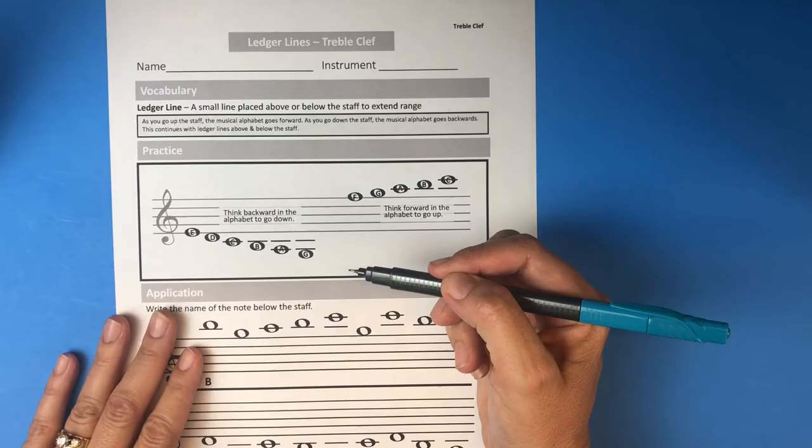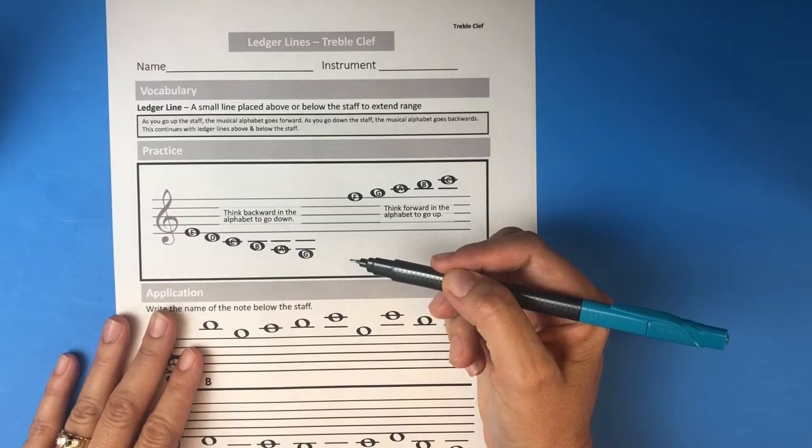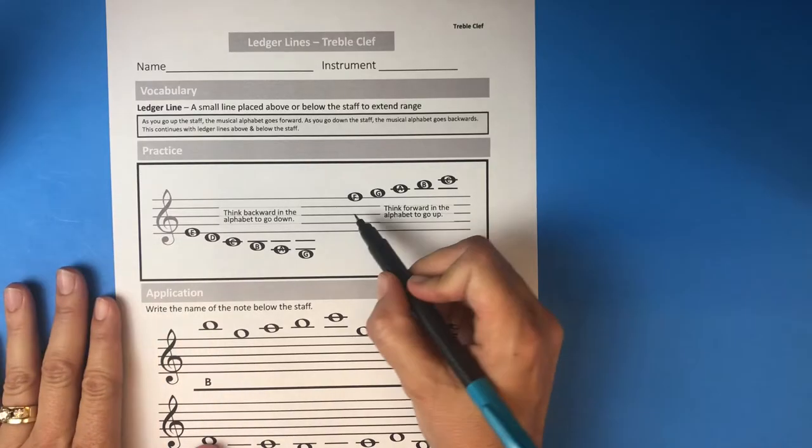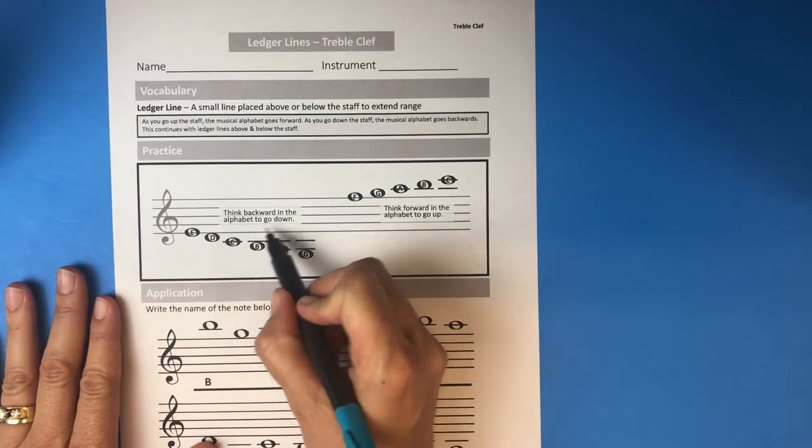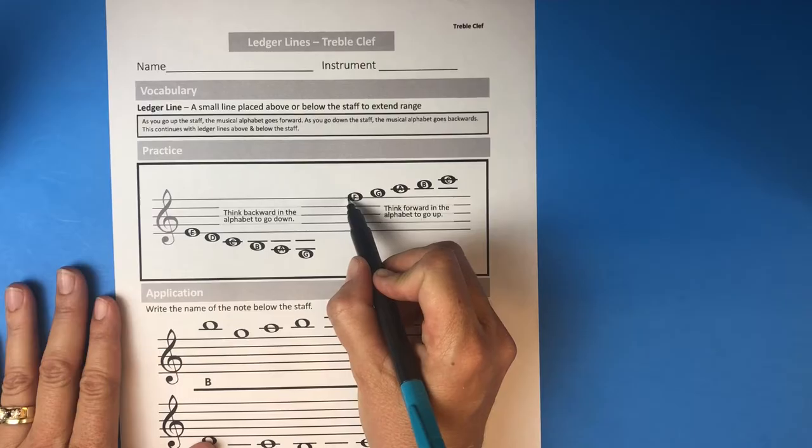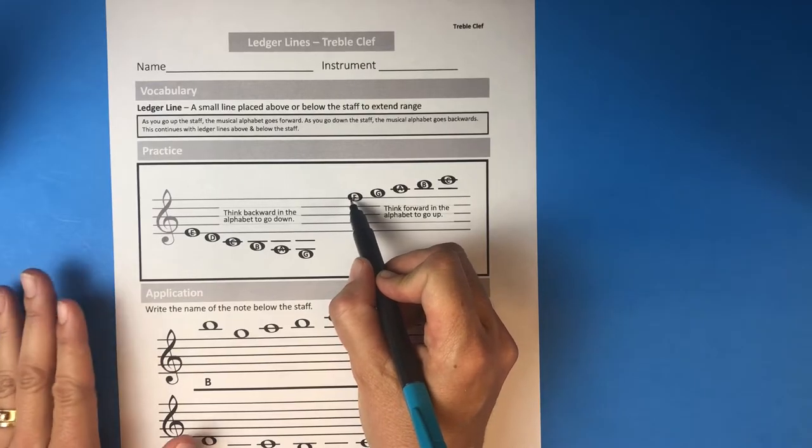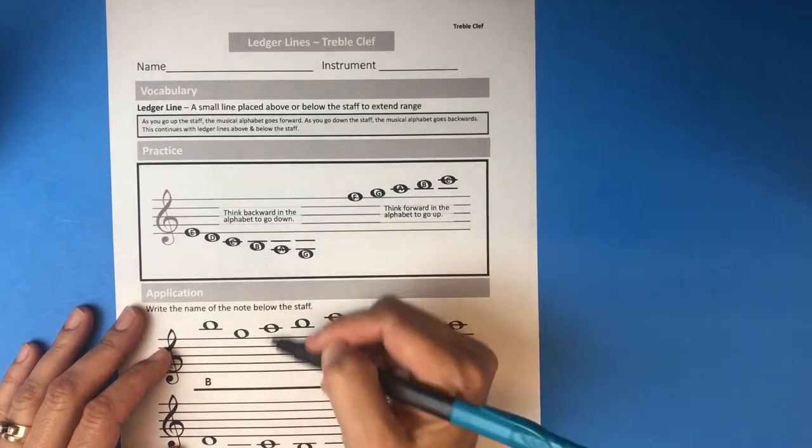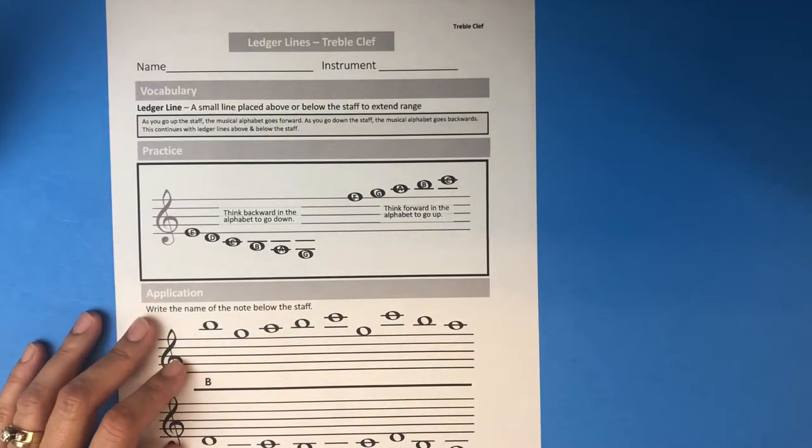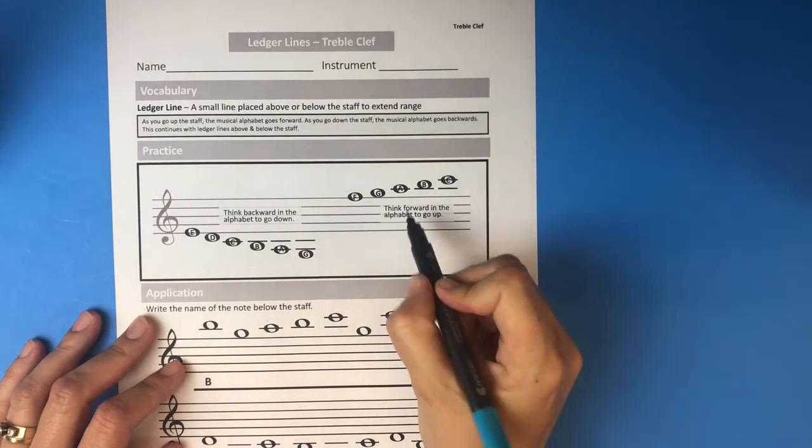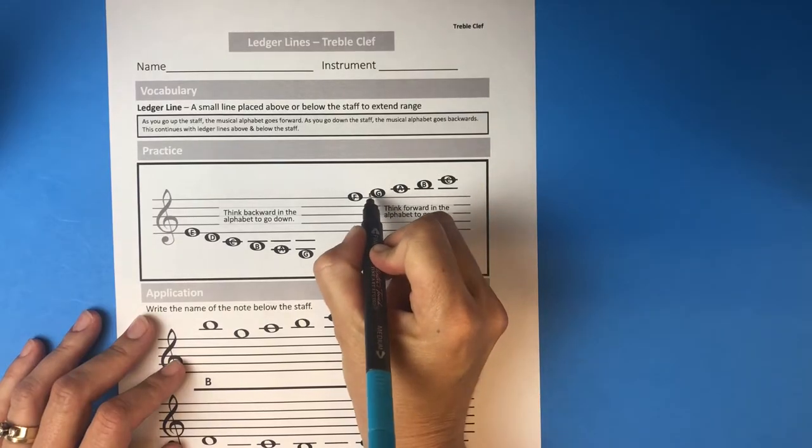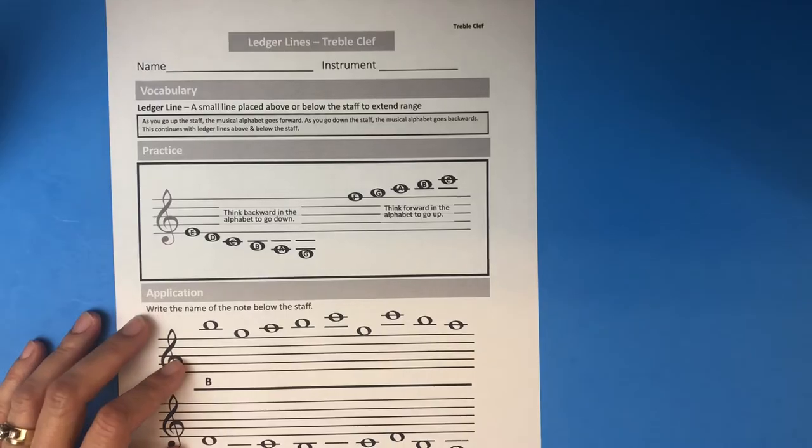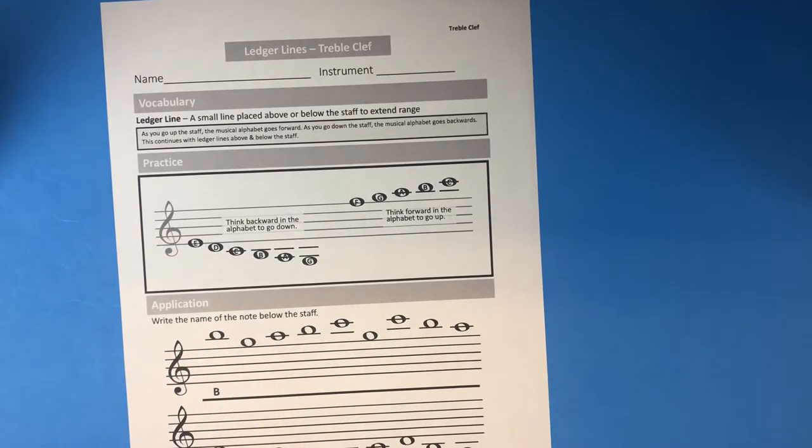Last lesson we were talking about how when you get to the top, you get to the end of the top line and we just stopped. But sometimes you need to play notes that are higher or lower depending on your instrument and what music you're playing. You might need to play above or below the staff.